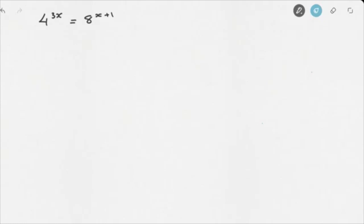Looking at this equation, we can see that on the left-hand side we have a power of 4, and on the right-hand side we have a power of 8. What makes this a little tricky is the fact that 8 isn't equal to some power of 4, nor is 4 equal to some power of 8. So the method here is to look for some number such that 4 is a power of that number and 8 is also a power of that same number.